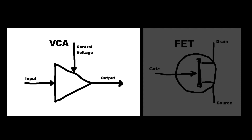The VCA completes this task more like how we might expect a computer to facilitate this. The control voltage can be virtually uninfluenced by the input signal's voltage entirely in this design, giving a feed-forward ability. The control voltage equates to a specific gain-reduction amount, which is then applied to the audio signal passing through the VCA.